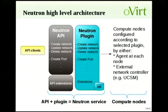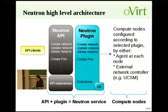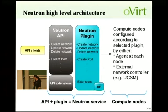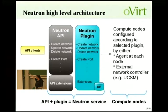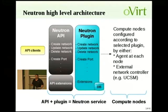Neutron has plugins including LinuxBridge, OVS, ML2 — the new one — and Cisco, NEC, and many others. Some are open source, some are closed source, giving us a lot of flexibility. The top-level architecture has clients, the Neutron REST API, a base API plus extensions not mandatory for a plugin to implement, and the plugin itself. On the compute node, it's either configured by an agent running locally or by some controller like a UCSM or SDN controller.